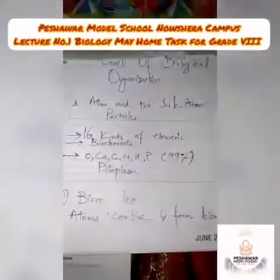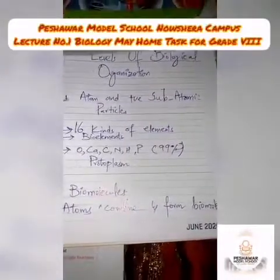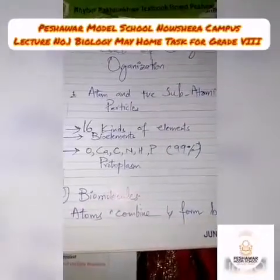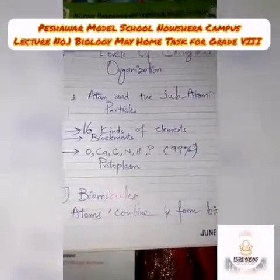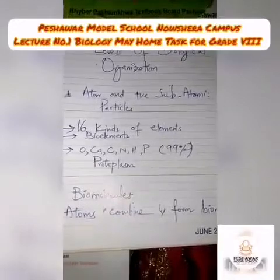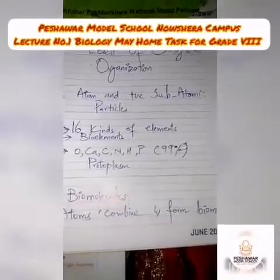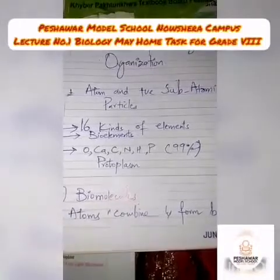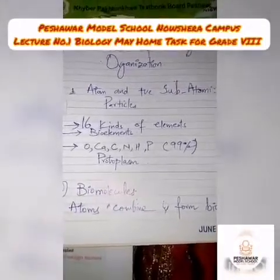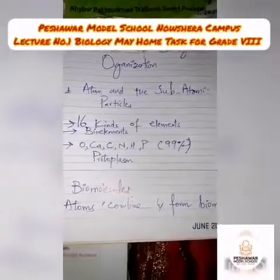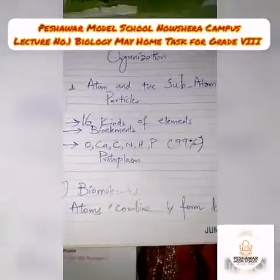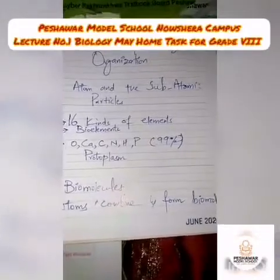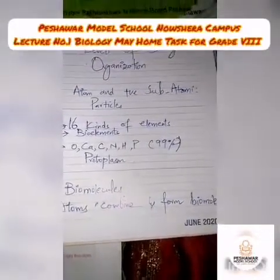All matter in this universe is made of atoms. These atoms combine together and form elements, which are also present in biological organisms. These bio-elements include oxygen, calcium, carbon, nitrogen, hydrogen, and phosphorus — they make up 99% of the protoplasm. Protoplasm is the inner content of the cell.